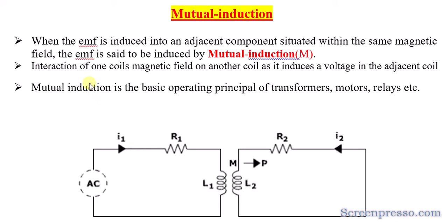The interaction of one coil's magnetic field on another coil induces a voltage in the adjacent coil. This first coil is L1, and the other coil is L2. The magnetic field of L1 interacts with L2 and induces a voltage in that adjacent circuitry. Because of this, the EMF is generated in the adjacent coil as well — this is mutual induction, denoted by M.